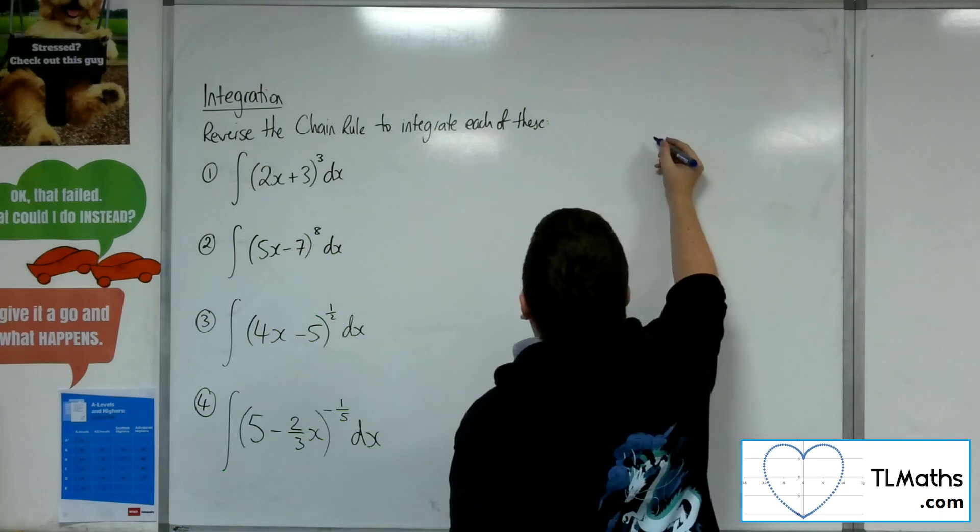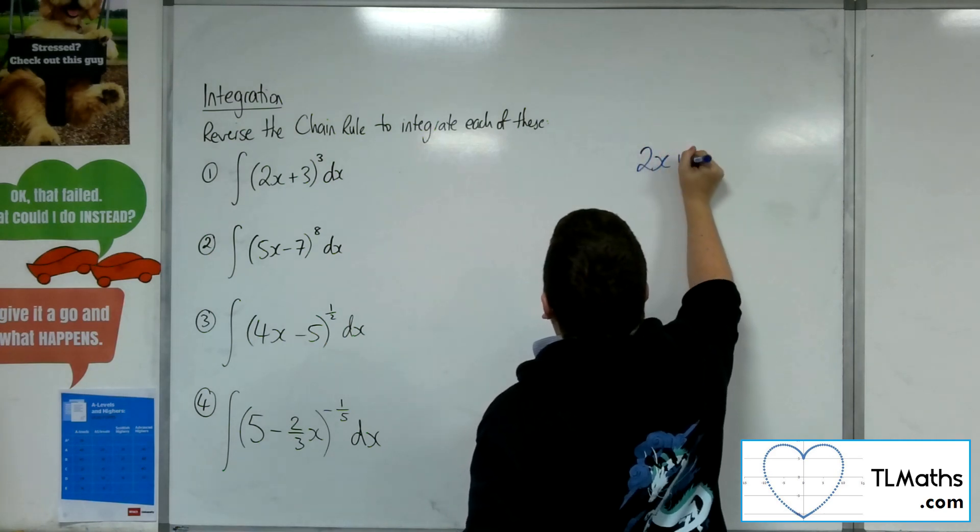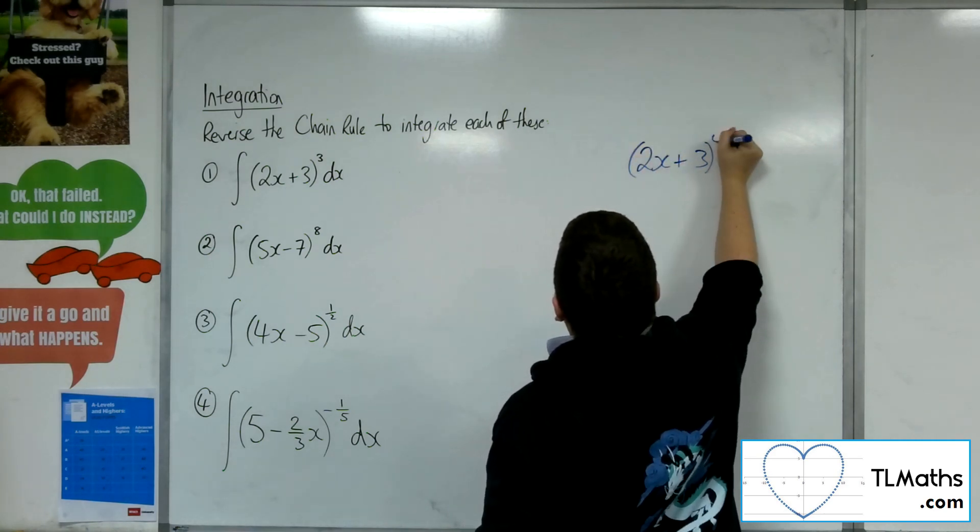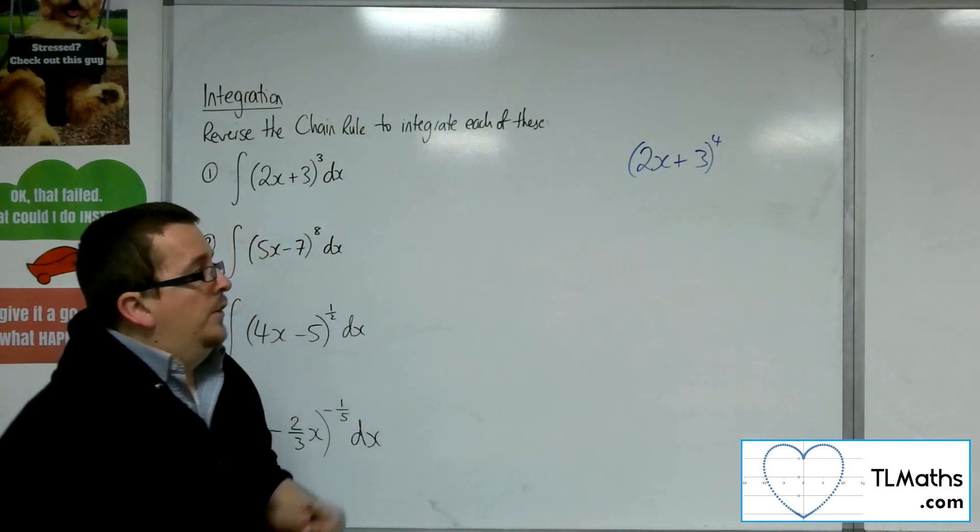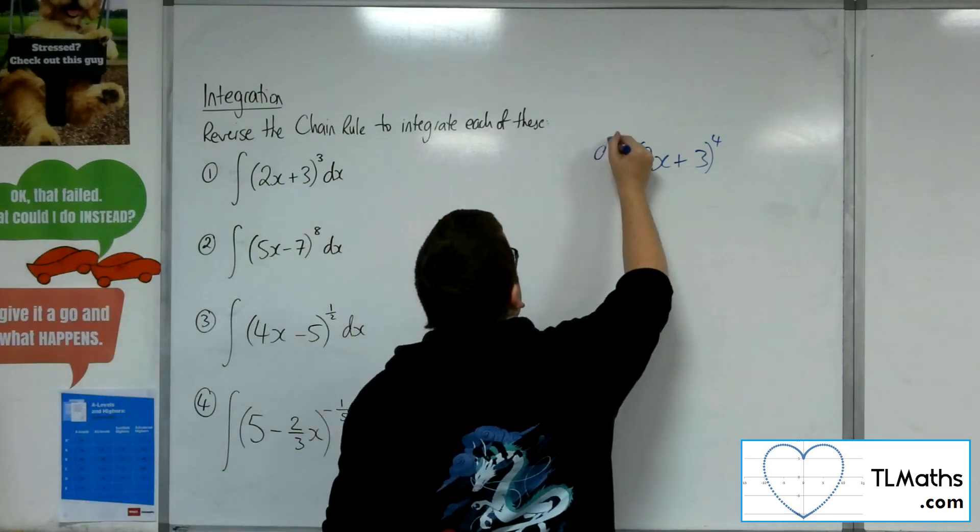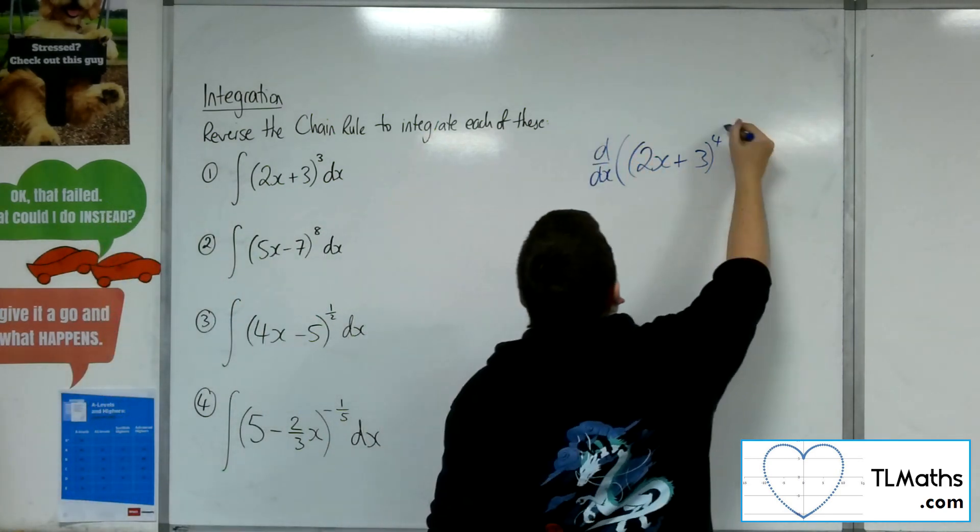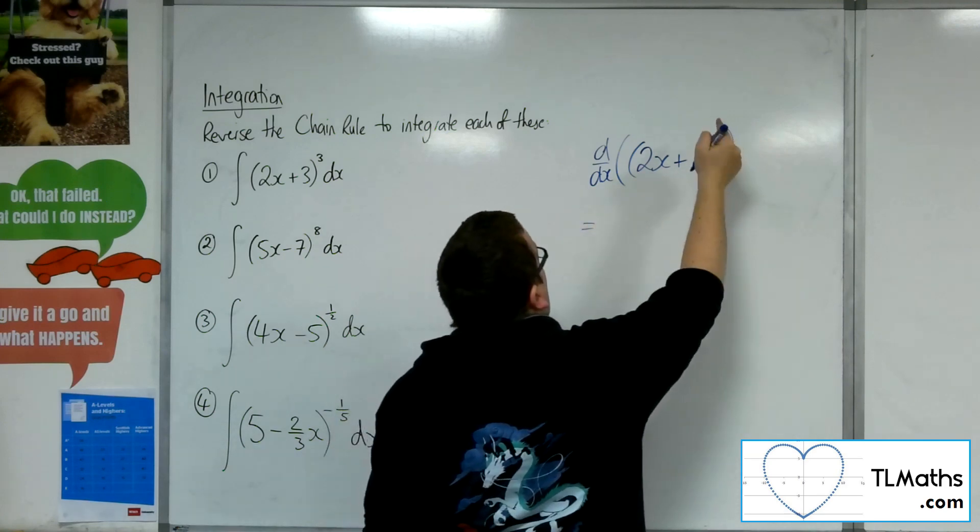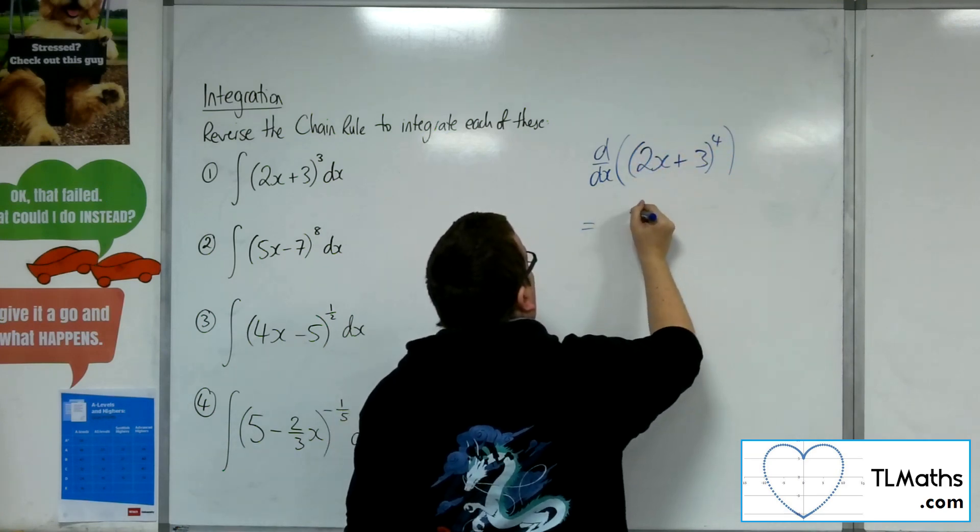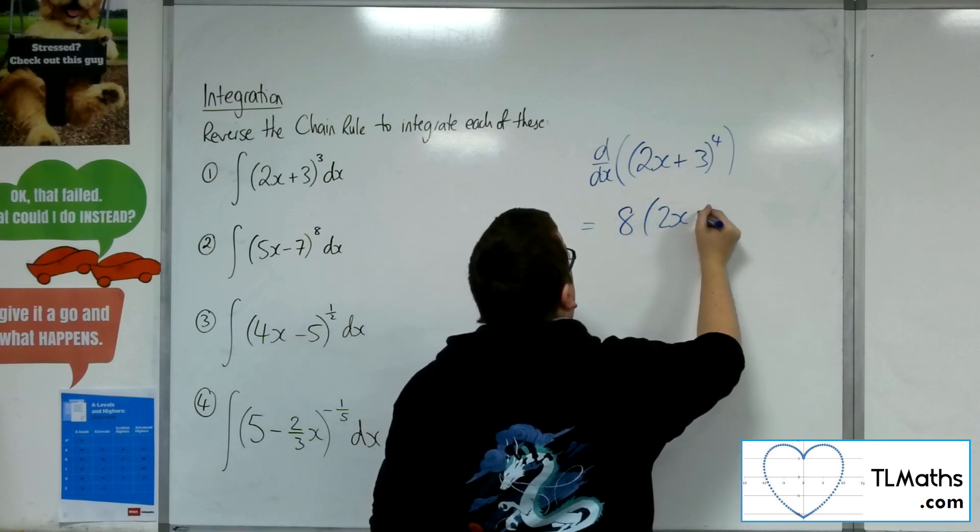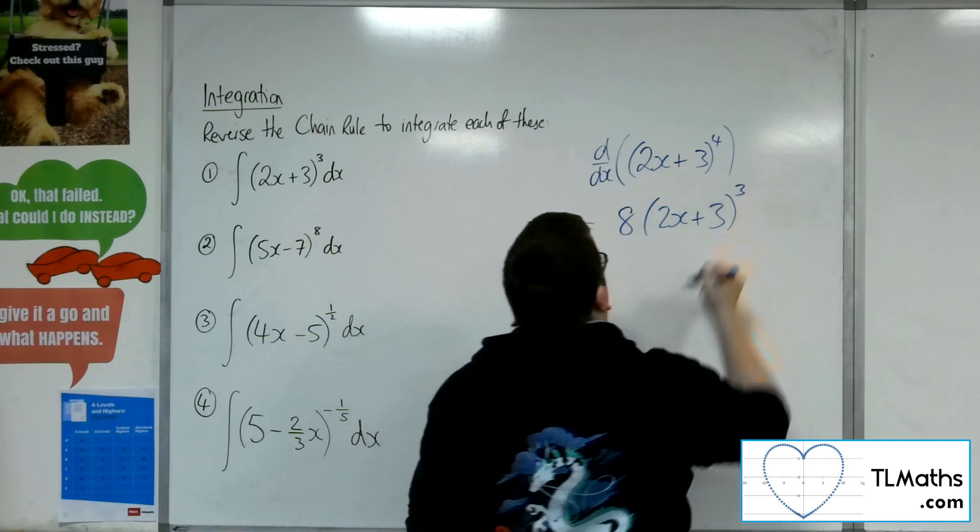So the first thing I would think about is that I know I'm going to get a 2x plus 3 to the power of 4. We're going to have one added to the power. So if I differentiate this with respect to x, I've got the 4 and the 2 coming to the front. So that would be 8 lots of 2x plus 3, drop 1 from the power.